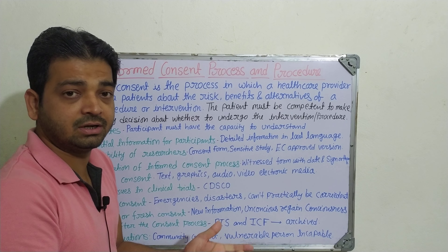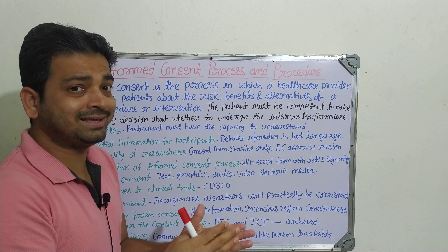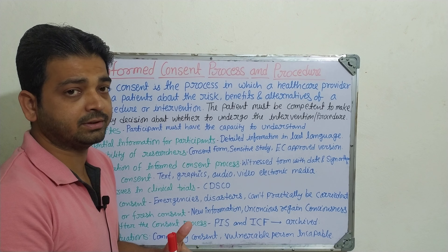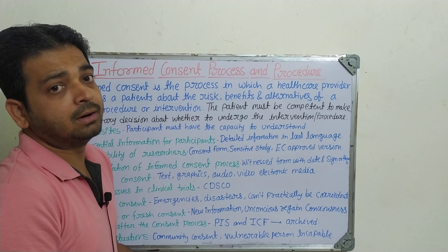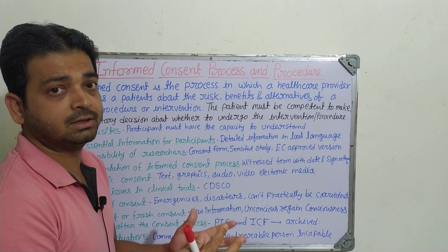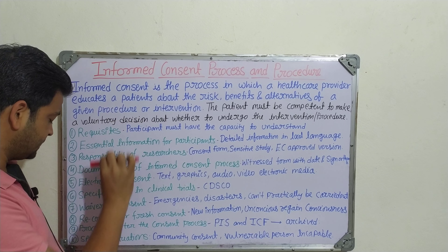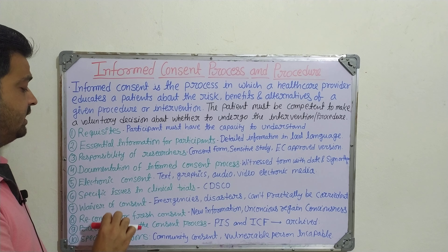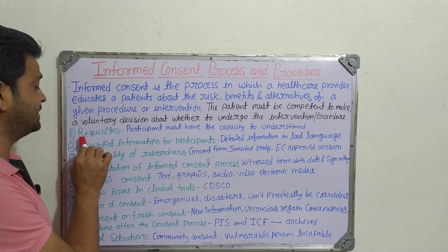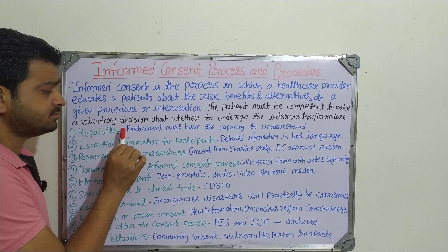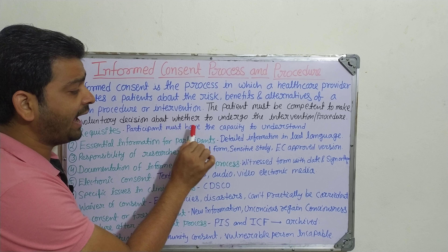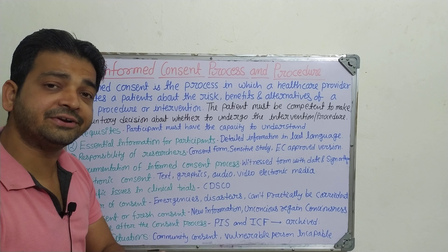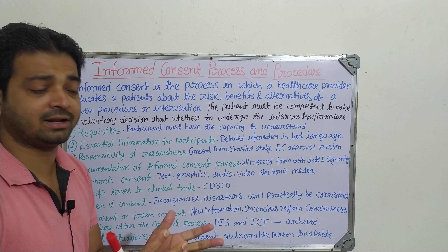If it is risky, if it is life-threatening, something he feels, he can deny. So nothing should be hidden — we have to tell the particular person everything that is going to be part of the process. So basically these are the main things which will be there in the consent process and the procedure. The first one is the requisites: the participant must have the capacity to understand. First of all, he should be literate enough to be able to understand.